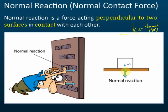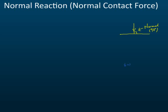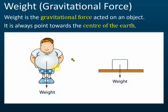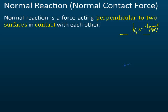Shafik asks how a normal reaction is measured. Normal reaction can be measured using a scale. For example, a man stepping on a bathroom scale gives a normal reaction to the scale because he presses on it. The reading shown on the scale is the reading of the normal reaction — that's how we measure normal reaction.